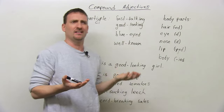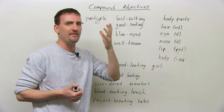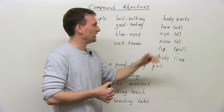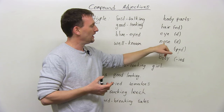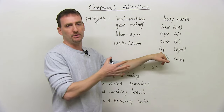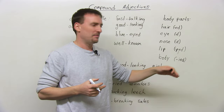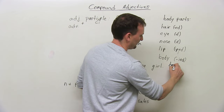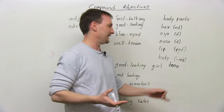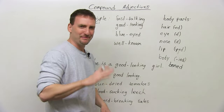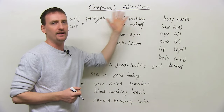Body parts can function as participles in compound adjectives. 'Eye' in 'blue-eyed' means to have something — to have blue eyes. So: a dark-haired woman, a brown-eyed boy, a long-nosed man, a thick-lipped woman, a wide-bodied truck. It doesn't have to refer to a person. You can also say 'big-boned' — often used, not very nicely, to describe heavy people. Add an adjective to a body-part participle and you have a compound adjective.